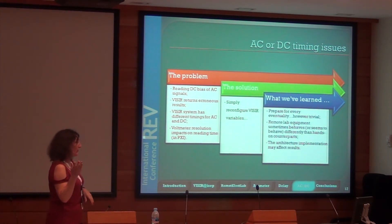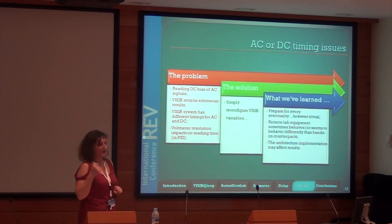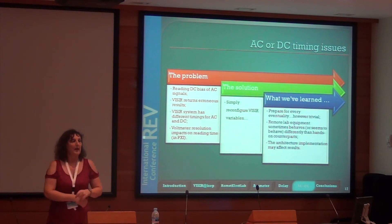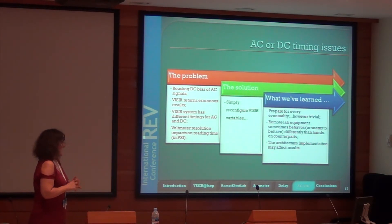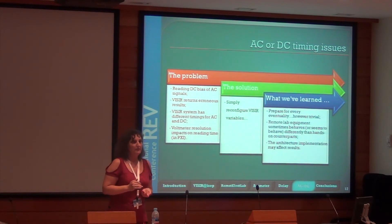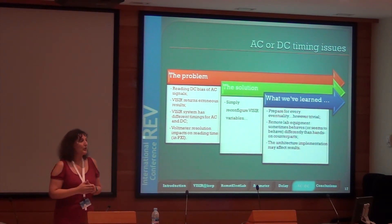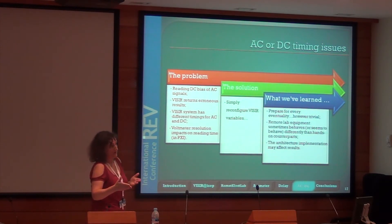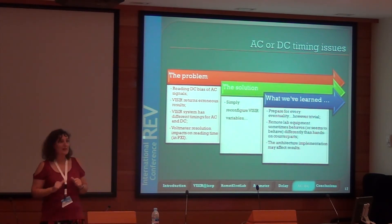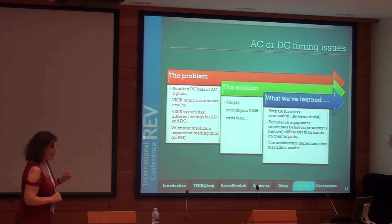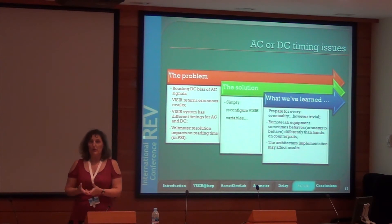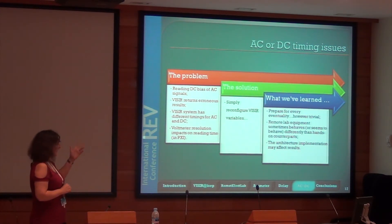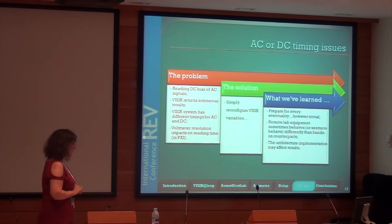The last problem — which had already been discussed earlier that morning — was about the readings of an average DC component of an AC signal. If one does that with Vizier, one gets wrong measurements. This is again related to the instantaneous measurements that Vizier provides, and it is also associated with the voltmeter used in the system and the way the system handles the hardware. This was overcome simply by reconfiguring Vizier variables.